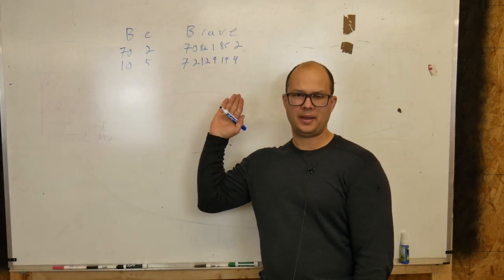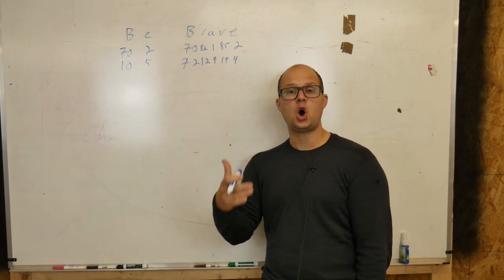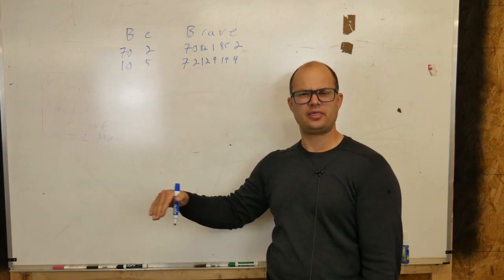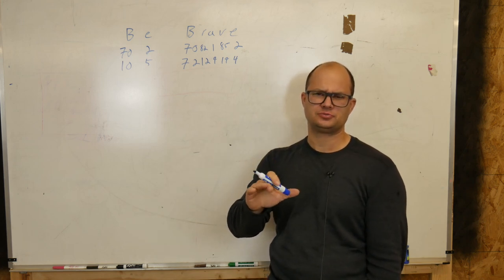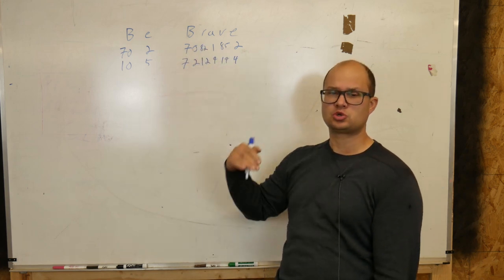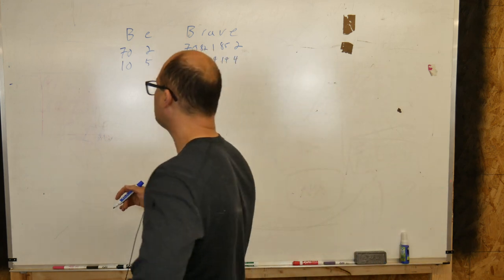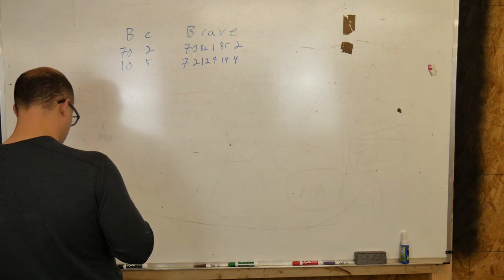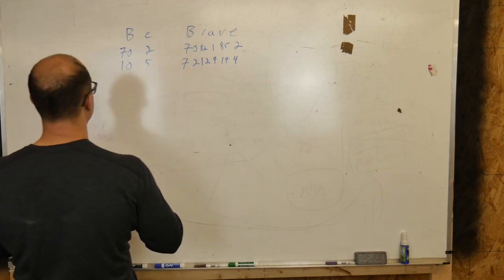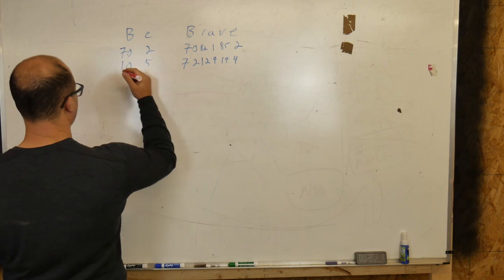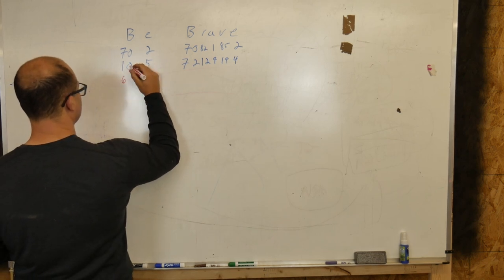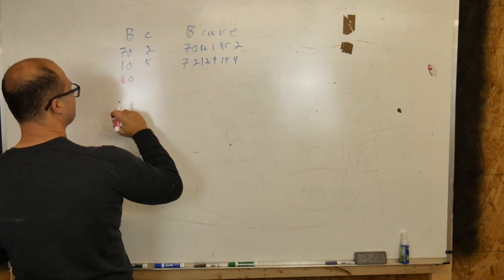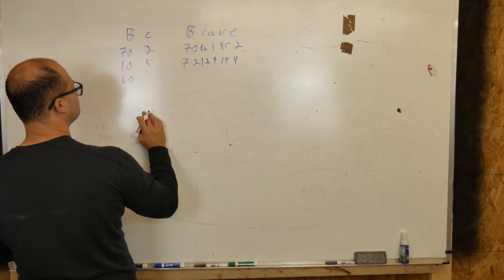So those are my one-time pad numbers. Now, to encode this message, I'm going to subtract. I think it ends up being called modular subtraction, which you'll see why in a second. But we're going to subtract. So to encode, we're going to subtract. So let's use a different color here in order to demonstrate what we're doing. So, 7 minus 1 is 6. 0 minus 0 is 0. 2 minus 5.